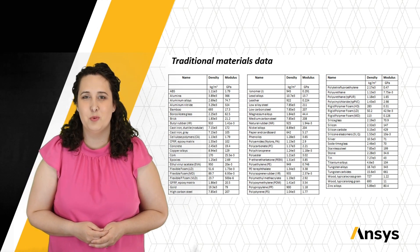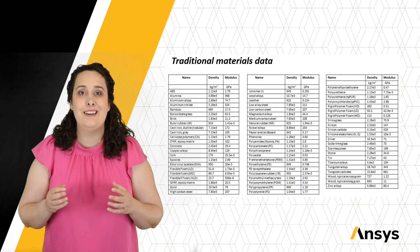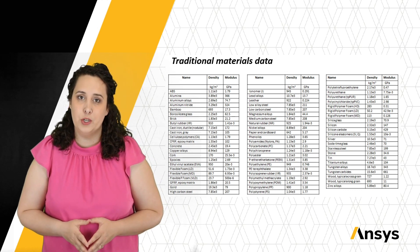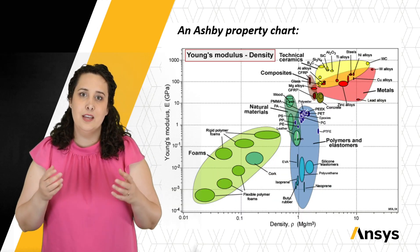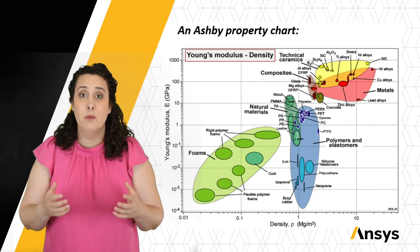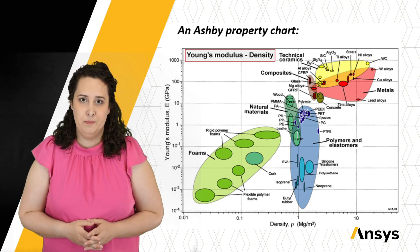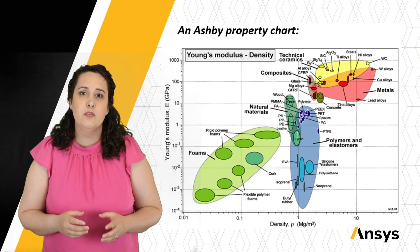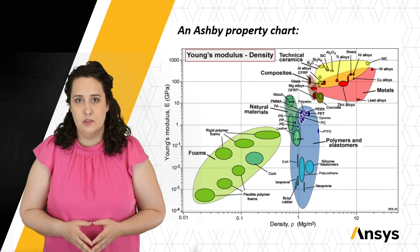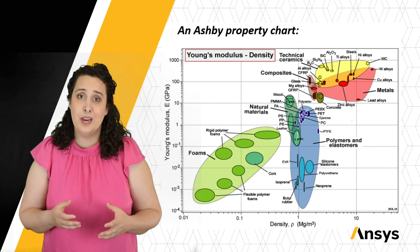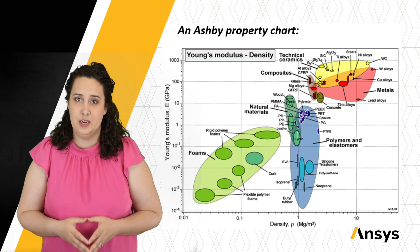Or we could take a more visual approach. Let's see the visual approach in action. This involves something called an Ashby property chart, like the one shown here. This has taken the values from that table and plotted them against one another. The small circles or bubbles represent individual materials, and the bubble showcases the range of values for that attribute.